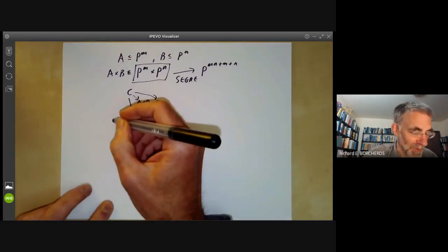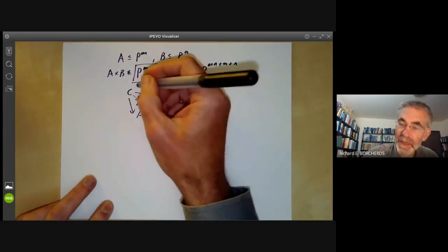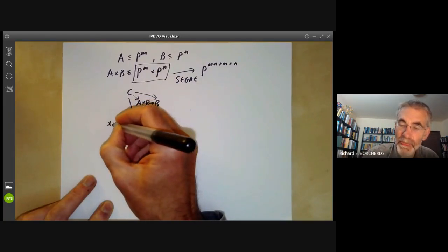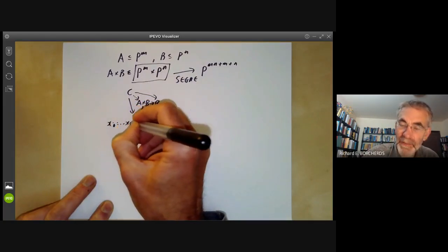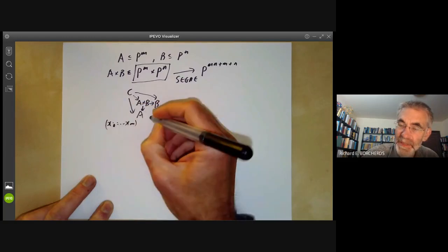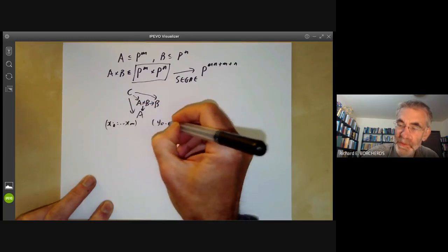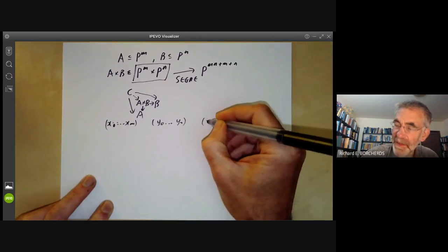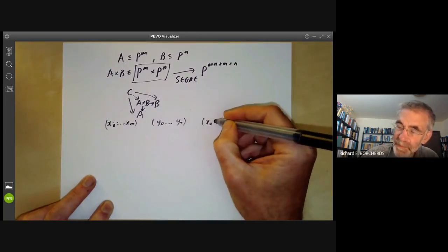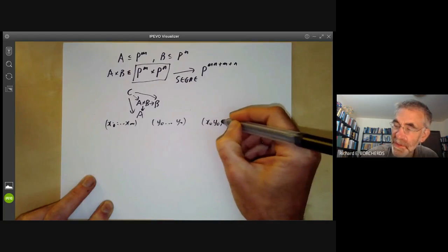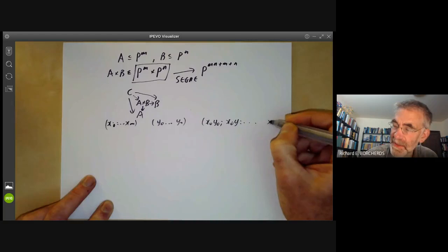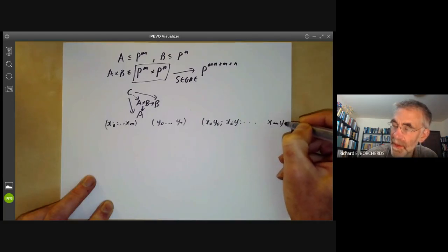So we better quickly recall what the Segre embedding is. So if P to the M has coordinates X0 up to XM and P to the N has coordinates Y0 up to YN, then the image of the Segre embedding is given by X0 Y0, X0 Y1 and so on up to XM YN.